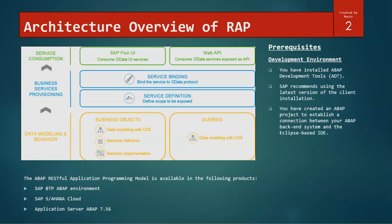This is the architecture of the RAP. It has three sections. One is where we will actually define the data model and the behavior. Most of the data models that we will be looking into is done using CDS. On top of the CDS entities, a behavior definition and implementation will be created.